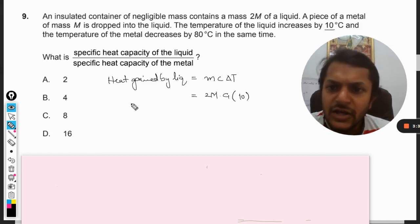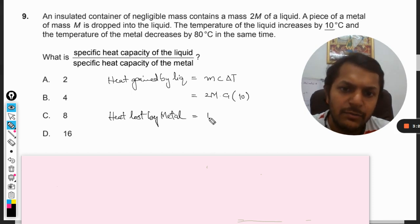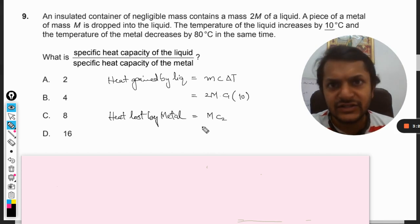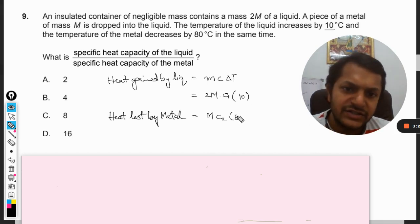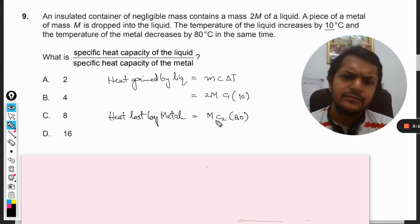What is the heat lost? So heat lost by metal, that will be again MC delta T, but the mass is capital M, specific heat will be taken as C2, and the temperature changes by 80 degrees for the metal. But we are not concerned with increase or decrease, we just need to equate them.